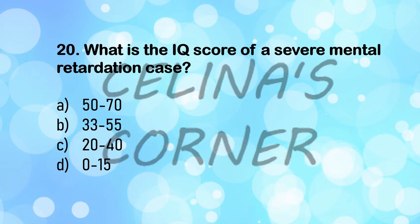Question 20: what is the IQ score of a severe mental retardation case? Mental retardation or mental impairment is an intellectual disability and a developmental disability, found mostly in children below the age of 18. There are three degrees based on severity: mild, moderate, and severe. Children with mild mental impairment have an IQ range of 50 to 70, moderate mental retardation is 35 to 50, and severe is 20 to 40. Thus, our answer is option C.